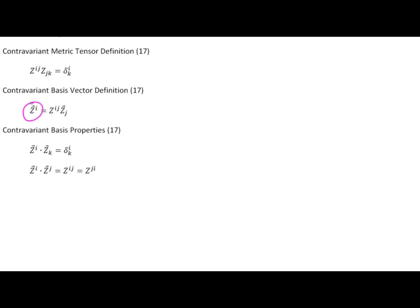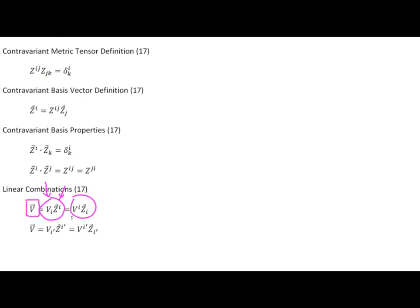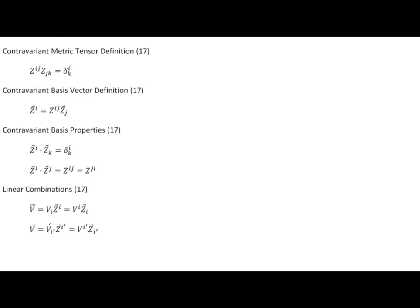Now that we have a new basis, we can use it to form linear combinations the same way we did with the covariant basis. We take the contravariant basis vector times a covariant scalar factor to form a linear combination, and it results in exactly the same vector as if we had done so with the covariant basis and a contravariant scalar factor. This new vector does not equal the covariant basis vector, and the scalar factors do not equal each other, but the combination results in the same vector — it's an alternate way of representing a vector, which is an invariant geometric object. In the next video, I'll take you through samples to show you what this new basis looks like in our sample coordinate systems.